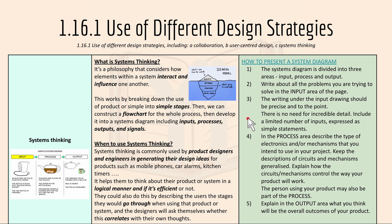The system diagram is divided into three areas like these right here. Write about all the problems you are trying to solve in the input area — the writing under the input drawing should be precise and to the point, with no need for incredible detail. In the process area, describe the type of electronics and/or mechanisms you intend to use, keeping descriptions of circuits and mechanisms generalized. Explain how the circuits or mechanisms control the way your product will work. The person using your product may also be part of the process.